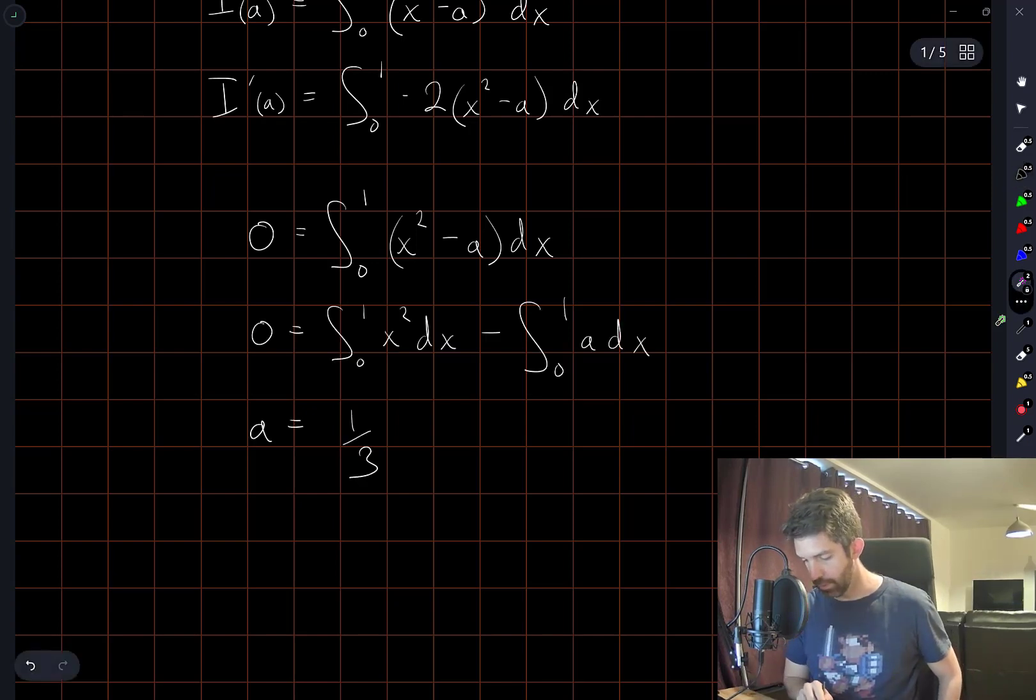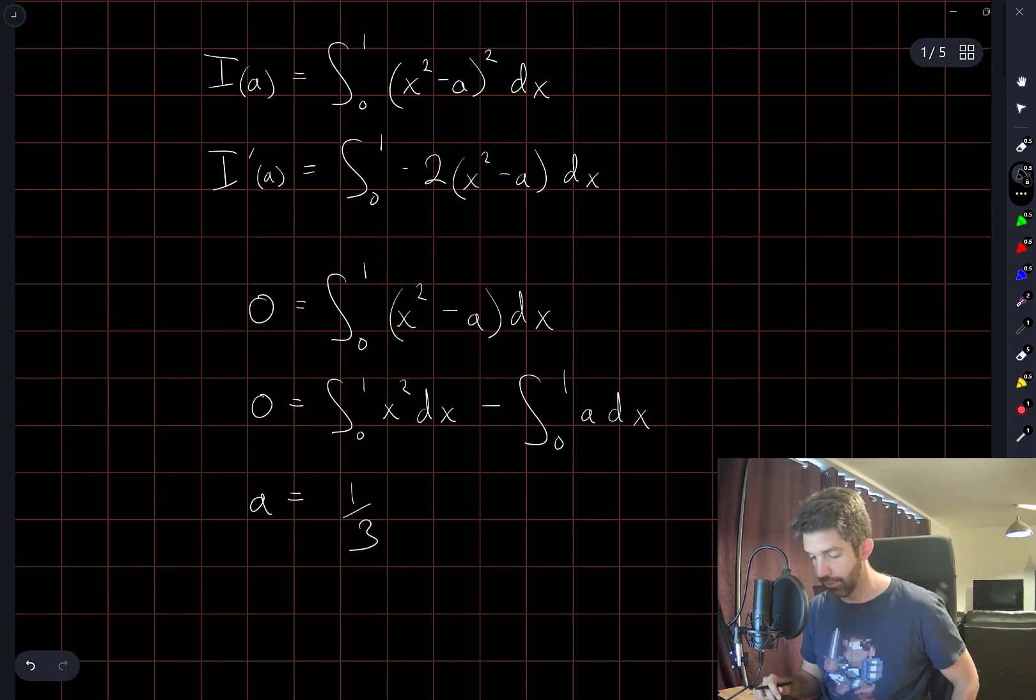Okay so I've split the integral into two parts and then integrating the constant a from 0 to 1 just gives us a, and I've also brought that over to the left hand side so the negative sign is gone. This integral I've just done quickly in my head, that's equal to a third, so we know that the value which minimizes this integral is a equals 1/3.